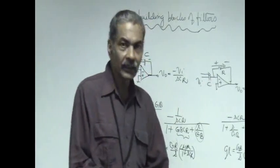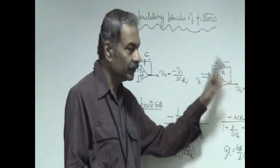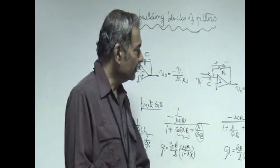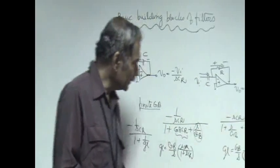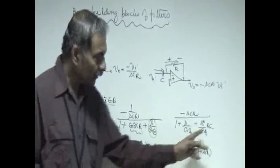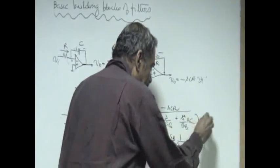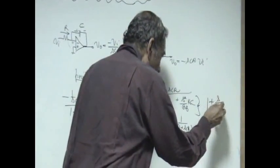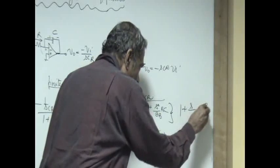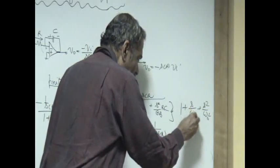The differentiator, on the other hand, has DC feedback, and therefore the output automatically stays at the input offset voltage, which is very small. However, the differentiator has a disadvantage: its transfer function changes from the ideal minus sCR to a second-order denominator. As we have seen in filters and control systems, this second-order denominator is characterized by natural frequency ω₀ and quality factor Q, where ω₀ equals g_b divided by RC.